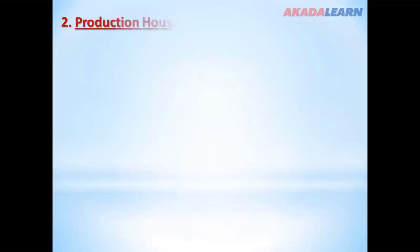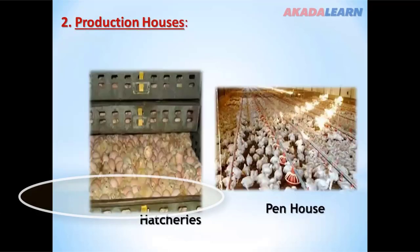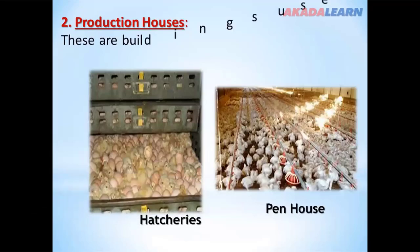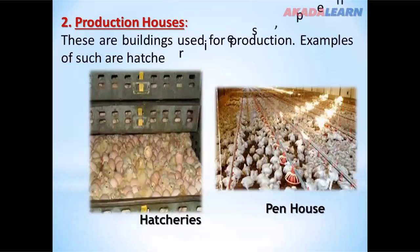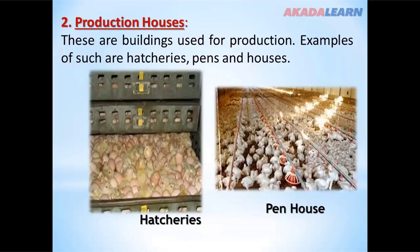The next type of farm building is production houses. These are buildings used for production purposes. Examples include hatcheries, pens and houses.